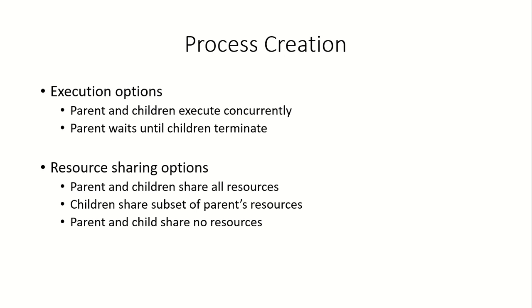What are the execution options? Now that the parent process has created a child or multiple children, the parent and the children can execute concurrently — that is one option. The other option is that after creating its children, the parent will wait for the children to terminate, and only after the children have terminated will the parent resume its execution.